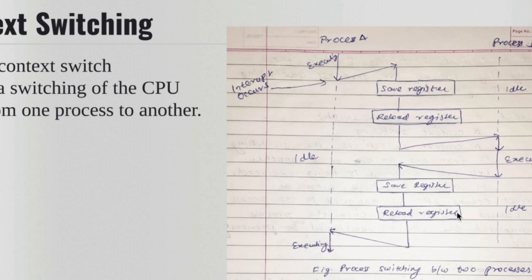Once it's reloaded we know where it needs to be executed from, so it needs to be resumed from and it starts executing again. So that's basically the context switching.